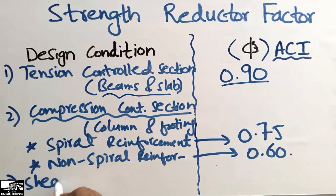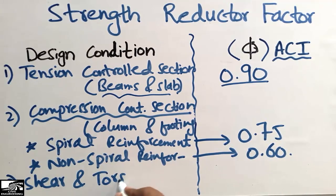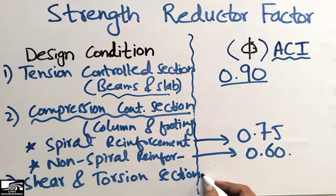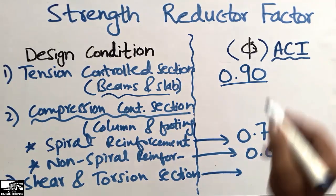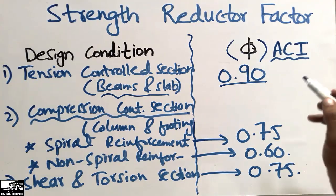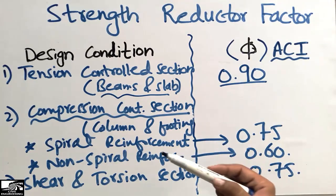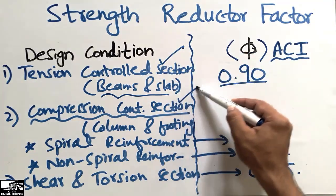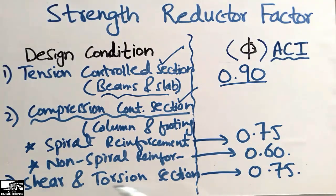The third design condition is the shear and torsion control section. For shear and torsion design, we use a strength reduction factor of 0.75. So we are mainly designing structural members as either tension control sections, compression control sections, or shear and torsion control sections.